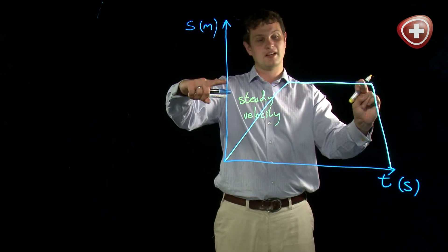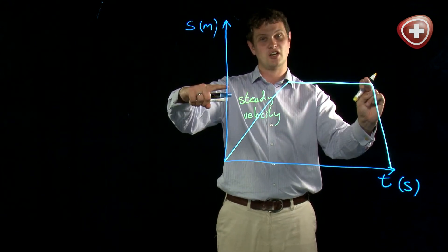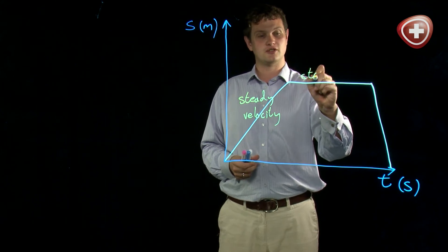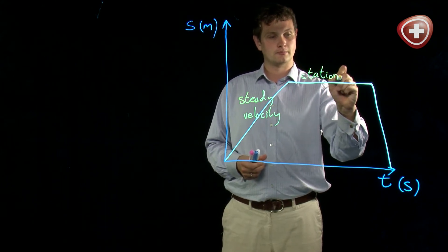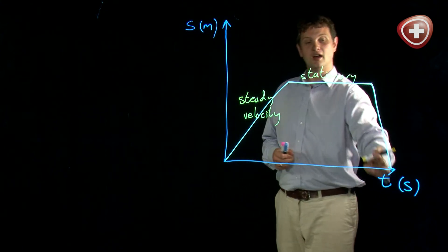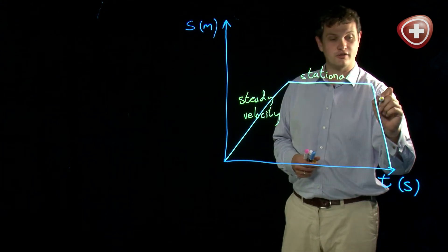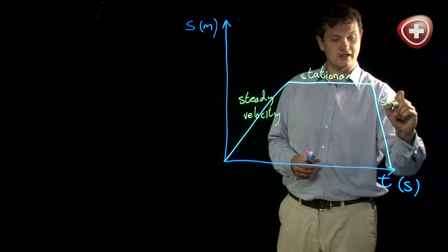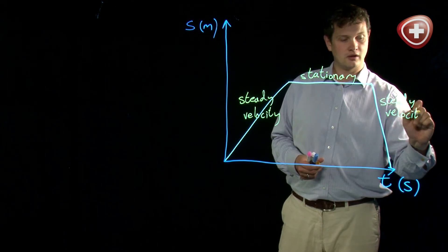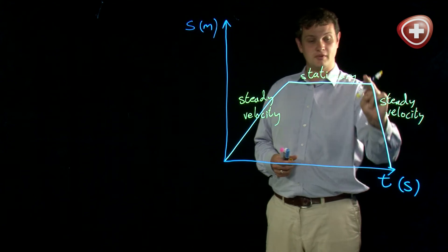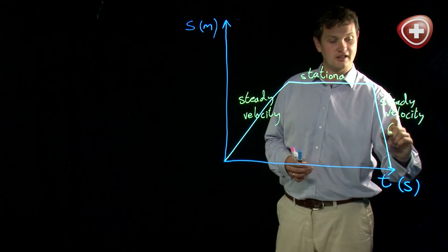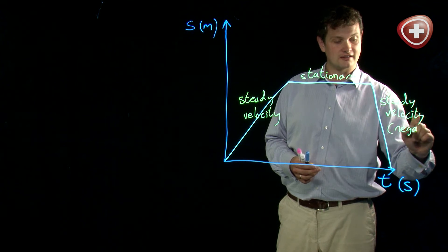This section is where my displacement isn't changing but time is still going along, so this is where I am stationary. And finally this last section — again we've got a nice straight line, so this too is going to be a steady velocity. But this time, because I'm going negative in my displacement, my velocity is also going to be negative.